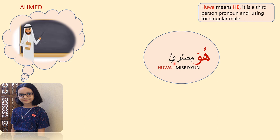When talking about three or more males, we use Hum. Hum is the third person detached pronoun meaning 'they,' used for masculine plural. Remember, detached pronouns in Arabic are called Dhamaa'ir al-Munfasila.